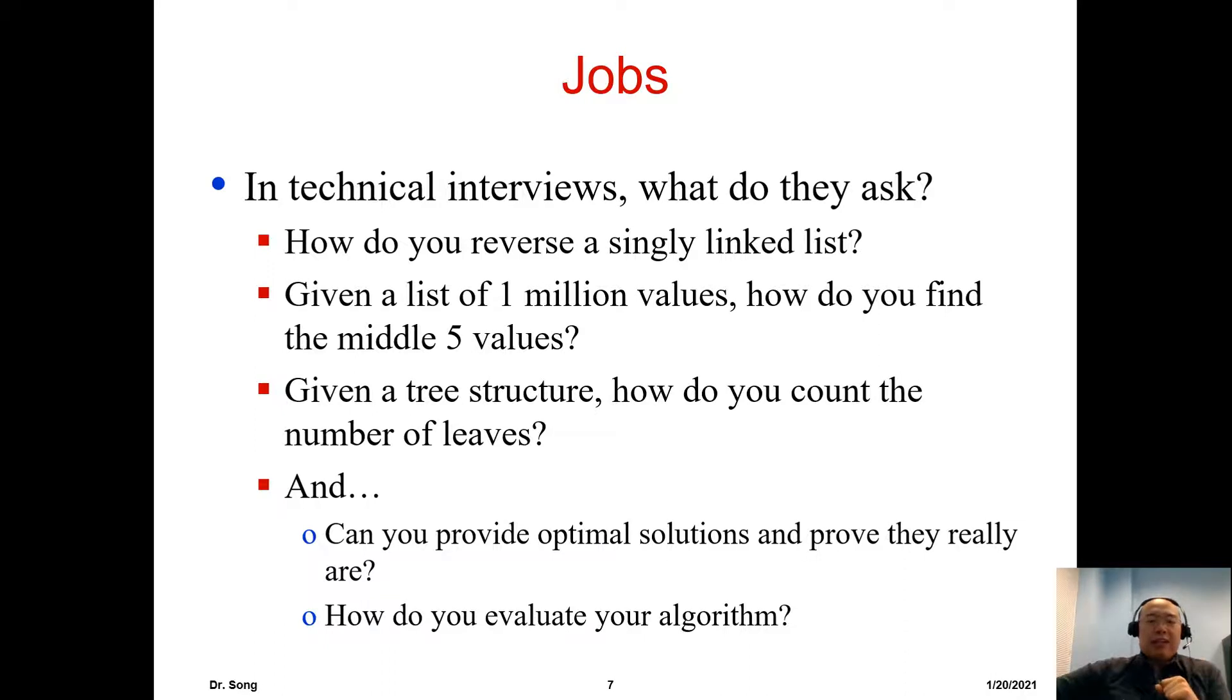The next one: given a list of one million values, how would you find the middle five values? One million values, and you want to find the middle five. From low to high, we only care about the middle five. There's an easy solution, right? You can sort out the values. But the problem is, if you want to sort out one million values, you're going to spend a lot of time. Is there any smarter way to do that? Later in this course, probably as we are approaching midterm one, we're going to talk about this.